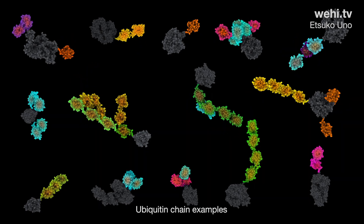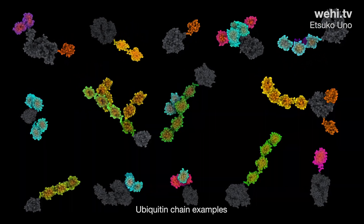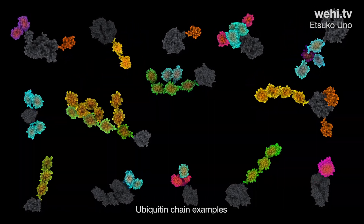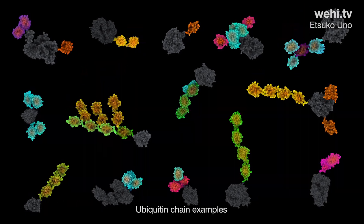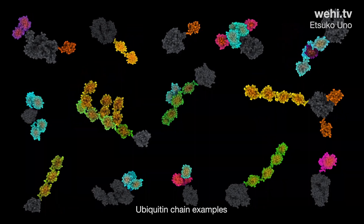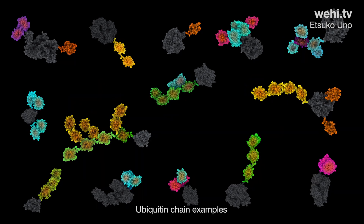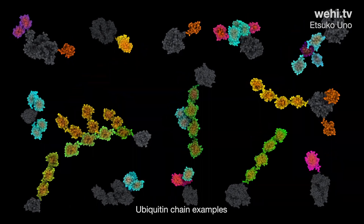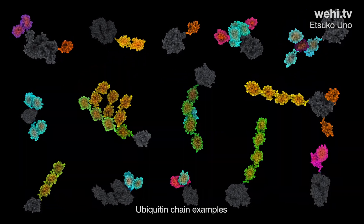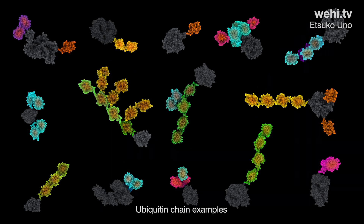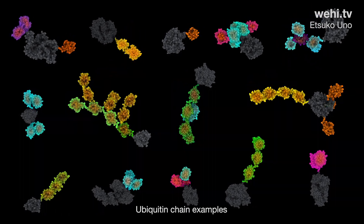Different ubiquitin chains are identified by their unique three-dimensional shape and electrostatic surface. Ubiquitin tagging creates a molecular code that controls protein function, activity, and disposal.